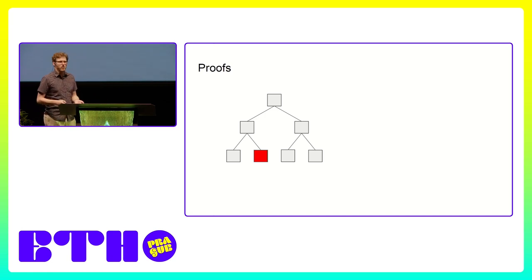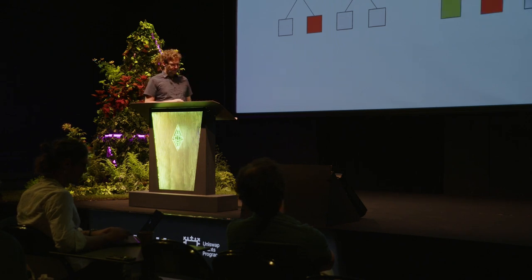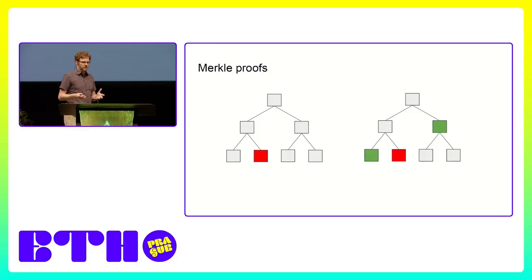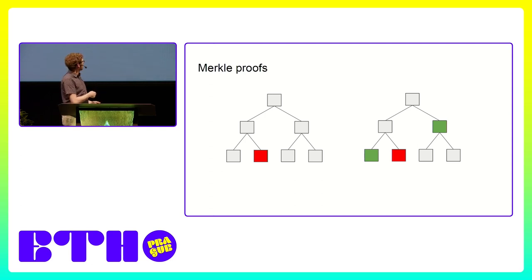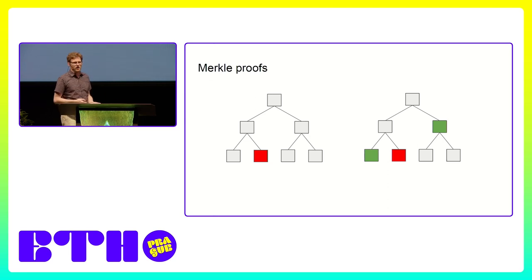You don't provide all the data, but you give some commitment that the data is the correct one. The challenge is: what happens if you want to prove that, for example, a red square is validated by this information? The way we currently do it is using a commitment technology called a hash. The problem with the hash is that to verify it you need all the data as input — so to prove a red square is included, you also need to pass the green square, and then the sibling node to verify that level.